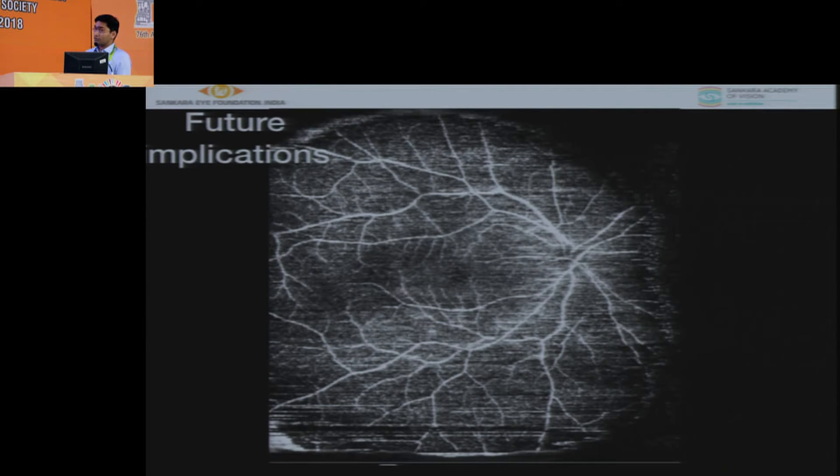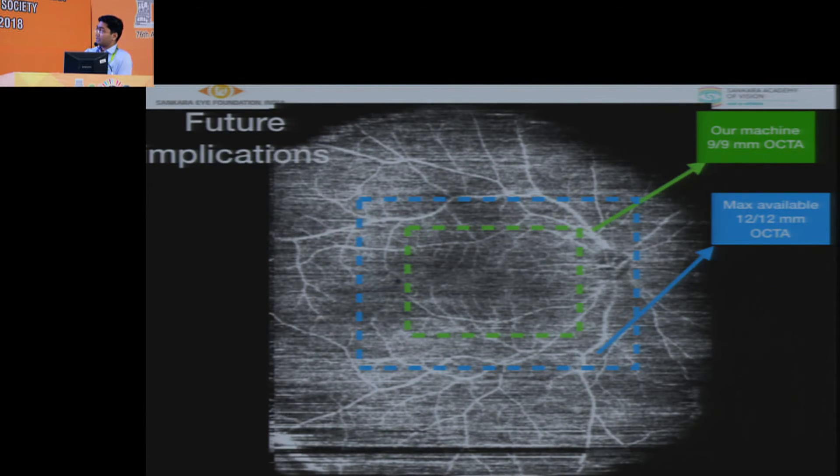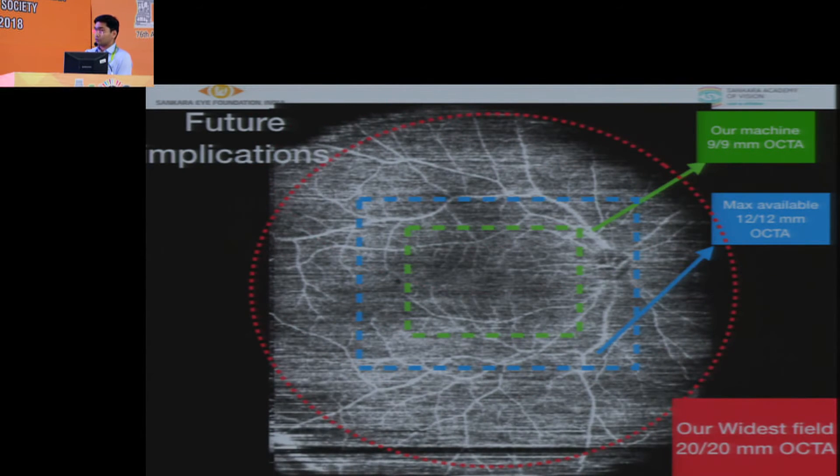Future implications - what you see right now is what we have done, the superficial and the deep retinal OCTA which we have done. This is what we have 9x9 and this 12x12mm which is maximum available right now. We are giving you widest OCTA - 20x20mm.